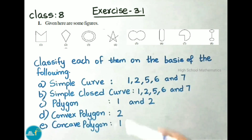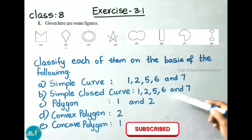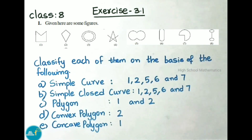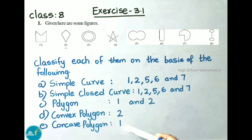Next, simple closed curves: figures 1, 2, 5, 6, and 7 are having simple closed curves. Next, polygon: we observe polygons only in figures 1 and 2. Next, convex polygon: we observe a convex polygon only in figure 2. Next, concave polygon: we observe a concave polygon only in figure 1.